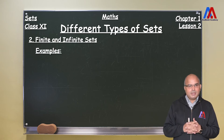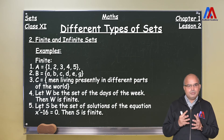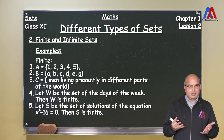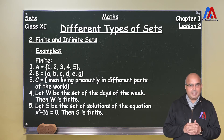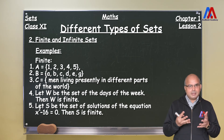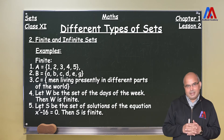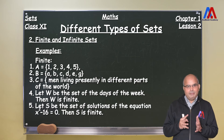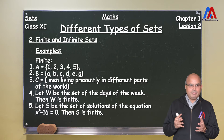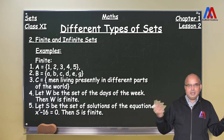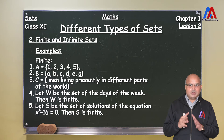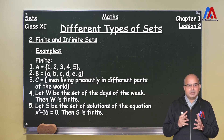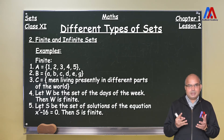For example, set A with members {1, 2, 3, 4, 5} — we know there are only 5 members and so it is definitely a finite set. A second set with members {A, B, C, D, E, G} is again a finite set because it has a fixed number of members. The set of men living presently in different parts of the world may be very huge, in billions, but it is possible to count it, so it is again a finite set. If W is the set of days of the week, then W is finite because it can have only 7 members.